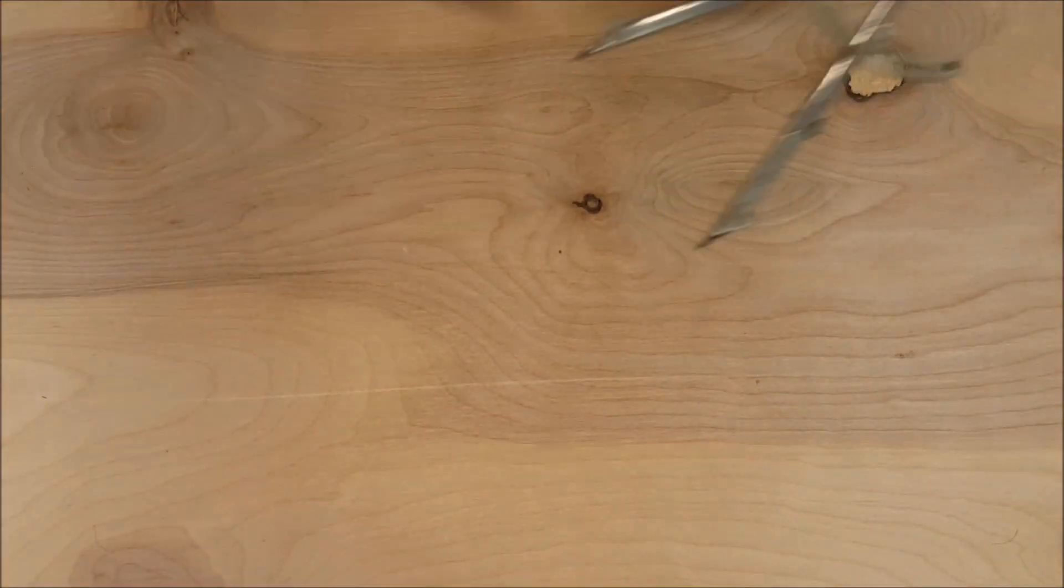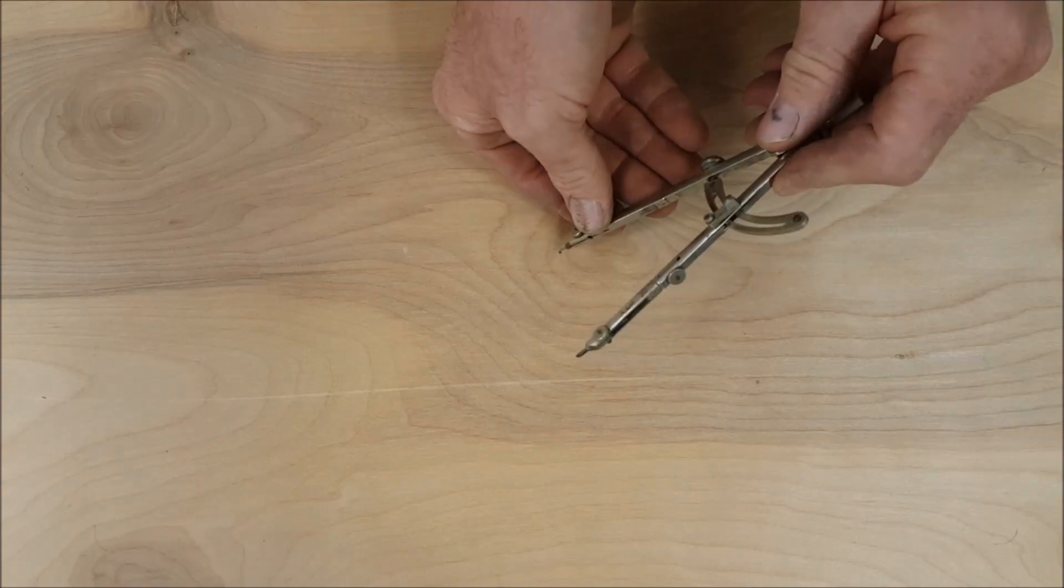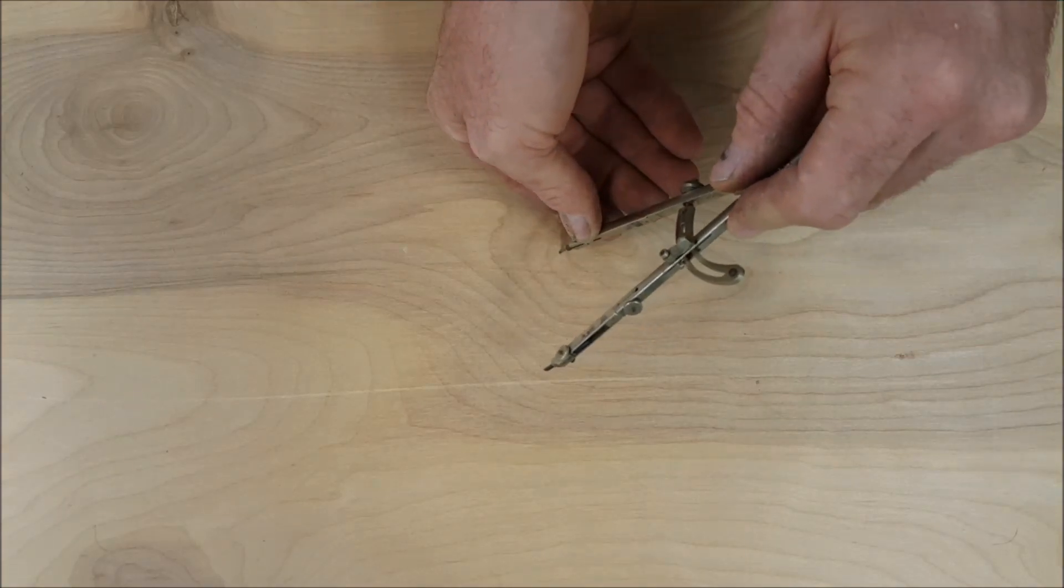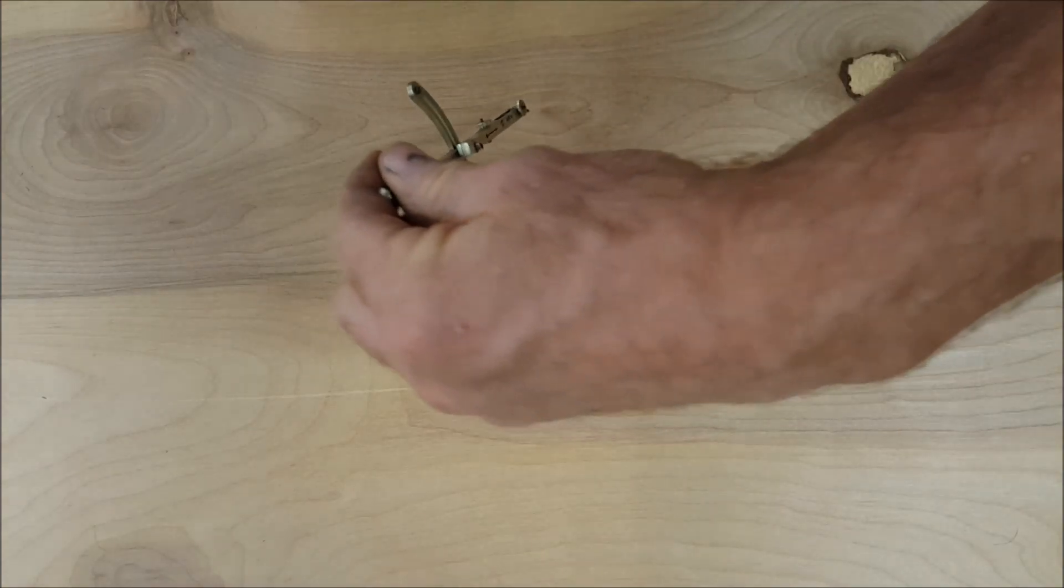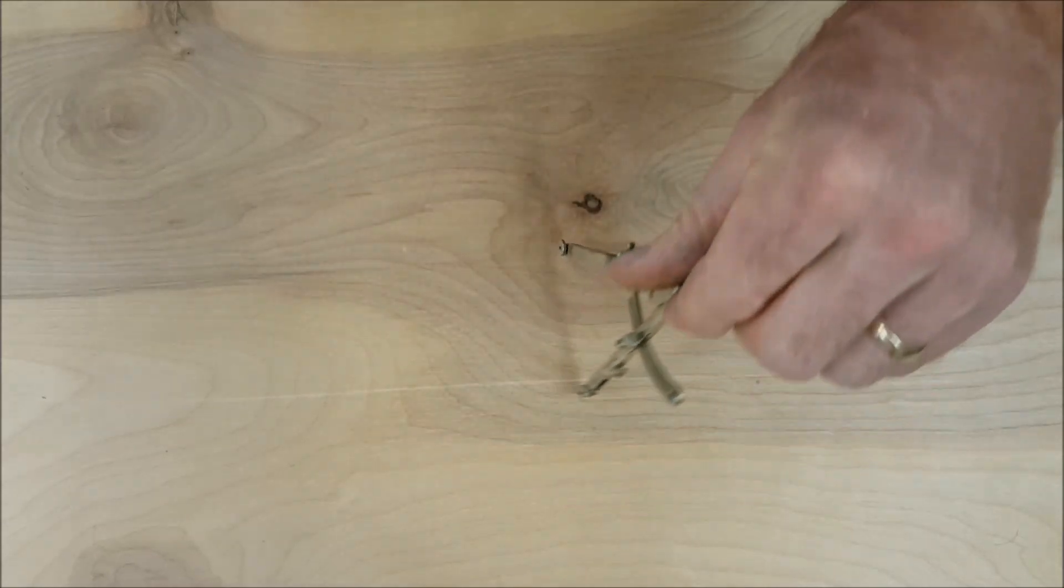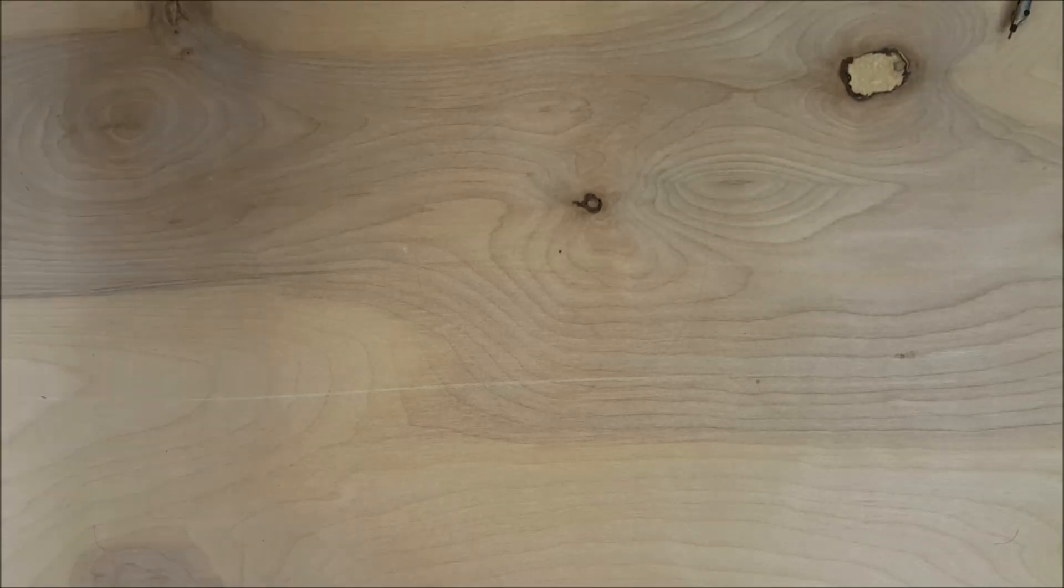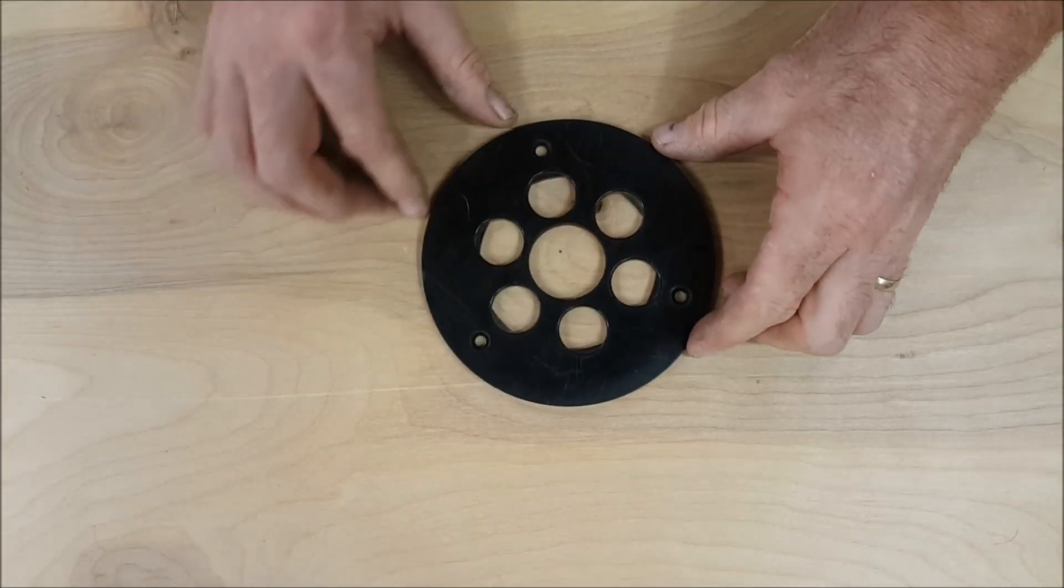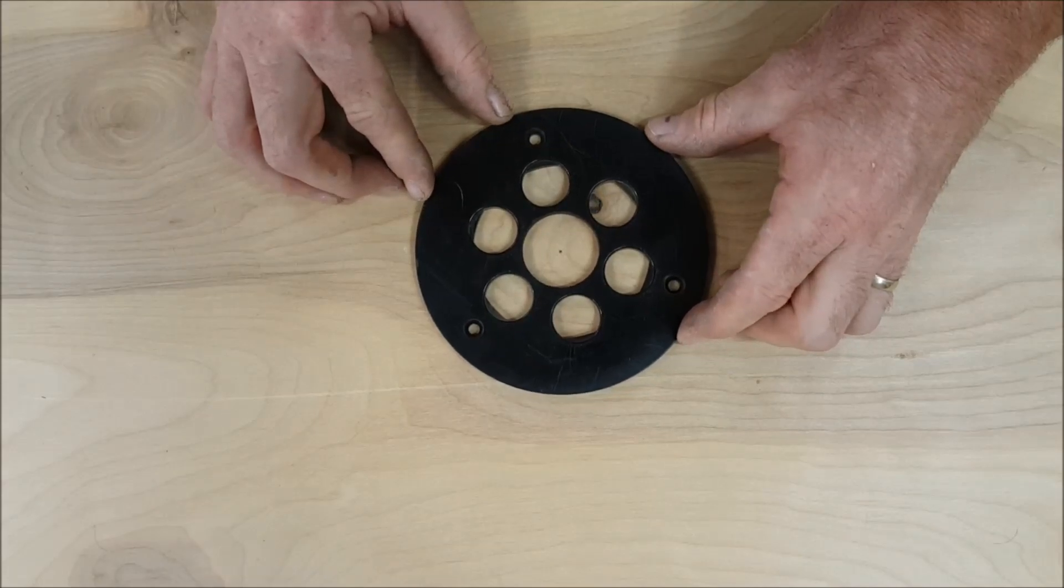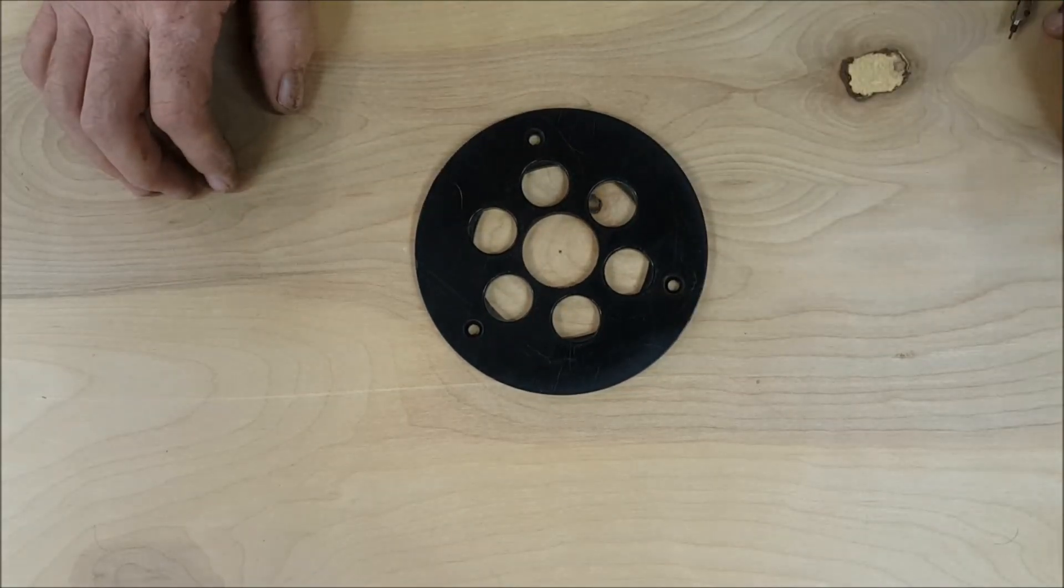So now I can take that measurement, set on my compass, place it in the center on my table, and draw my circle. And now I've located my plate exactly centered.